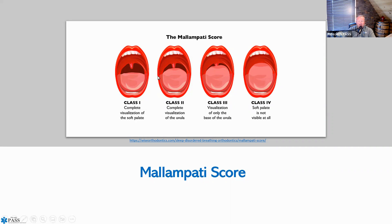Class 2 Mallampati: the tongue comes up and covers more, so you're not able to see the entire uvula, making intubation a little more difficult. A class 2 represents visualization of the uvula. Class 3 means you can only visualize the base of the uvula. And class 4 means the soft palate is not visible at all.